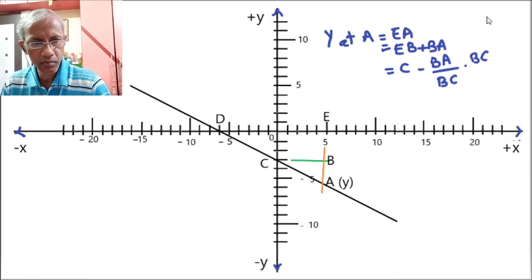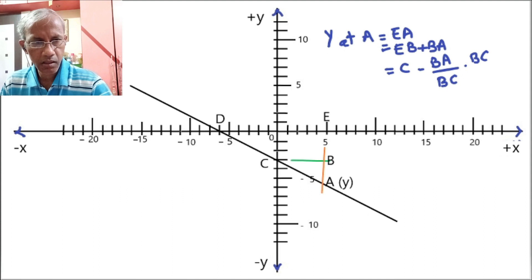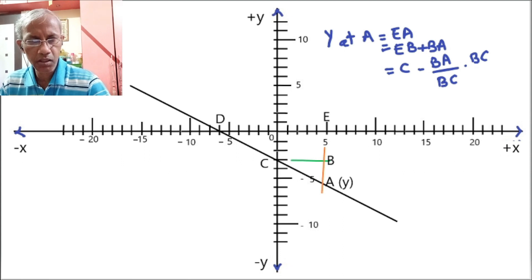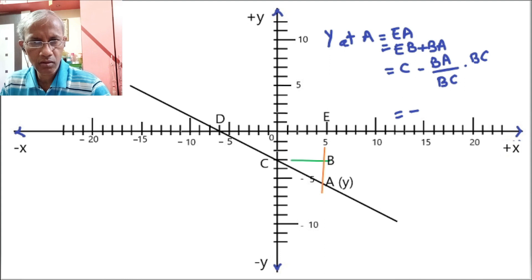We will try to find out the value of y at point A. In the right triangle CBA, y at point A will be equal to the total length EA, and EA is the total value of EB plus BA. Now EB is equal to the constant where the line cuts the y-axis, so it can be written as c.